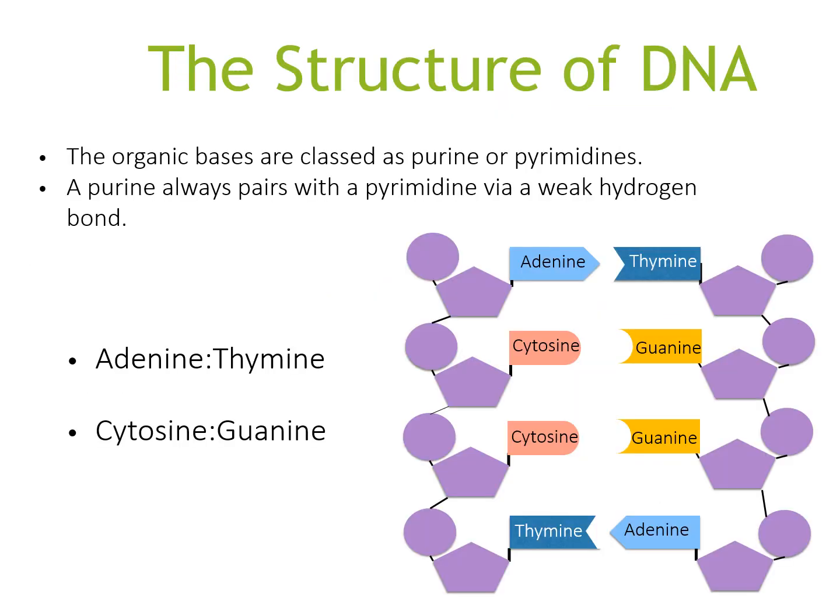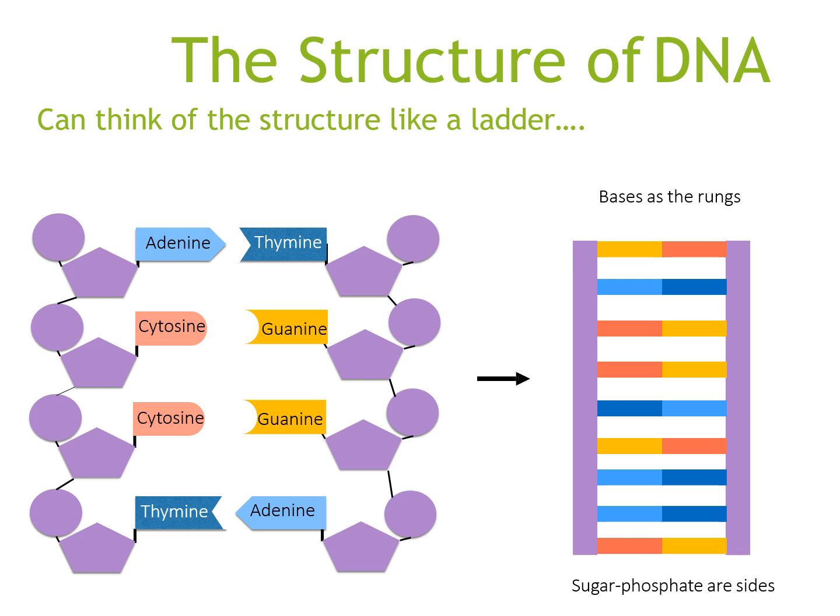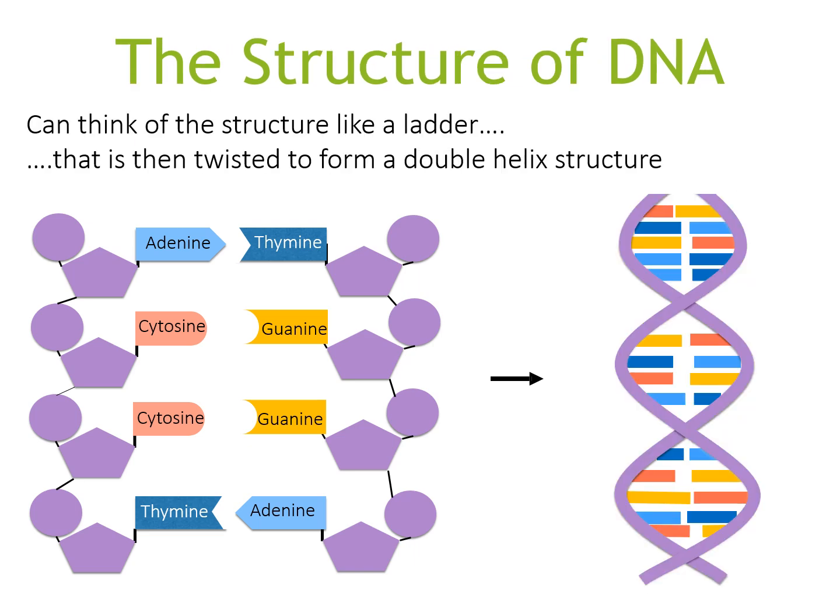The bases adenine, thymine, cytosine, and guanine are classified as either purines or pyrimidines. The rule is that a purine always pairs with a pyrimidine via a weak hydrogen bond. Adenine and guanine are your purines, while cytosine and thymine are your pyrimidines. So adenine pairs with thymine, and guanine pairs with cytosine. Think of the structure as like a ladder that is then twisted to form the double helix.